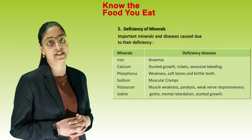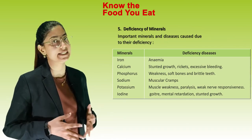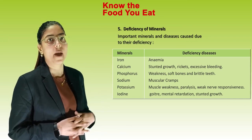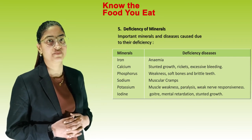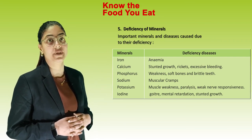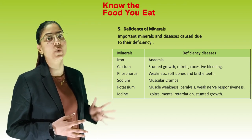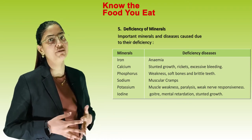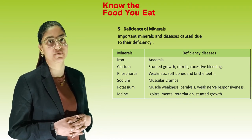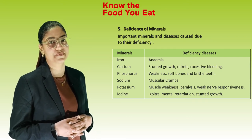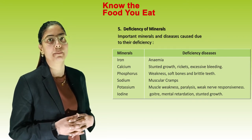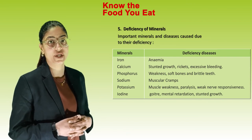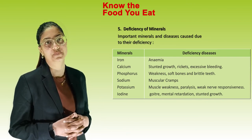Deficiency of minerals and their diseases: Iron deficiency causes anemia. Calcium deficiency causes stunted growth, rickets and excessive bleeding. Phosphorus deficiency causes weakness, soft bones and brittle teeth. Sodium deficiency causes muscular cramps. Potassium deficiency causes muscle weakness, paralysis and weak nerve responsiveness. Iodine deficiency causes goiter, mental retardation and stunted growth.